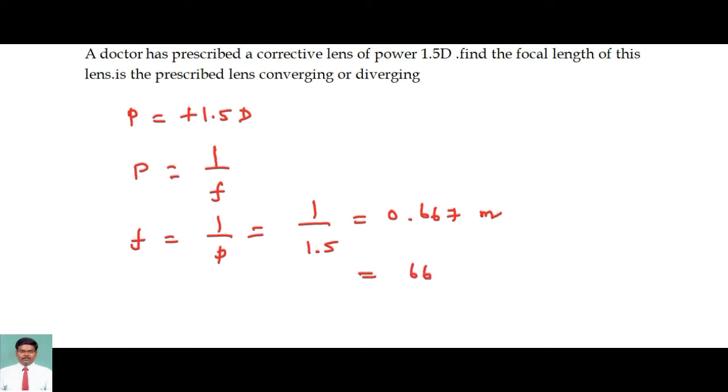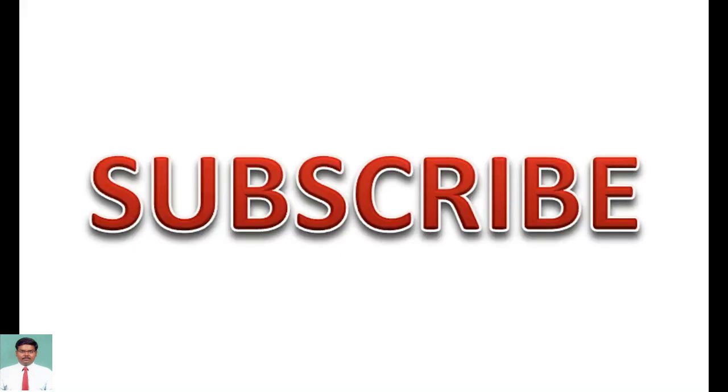66.7 centimeters. So as the power of the prescribed lens is positive, the lens is a converging lens, that is a convex lens. Subscribe to my channel and press the bell icon for important updates.